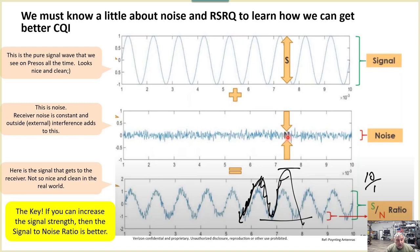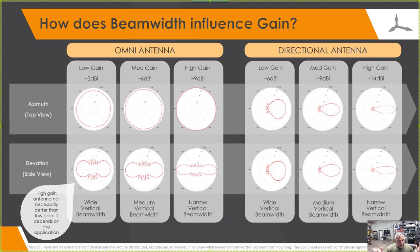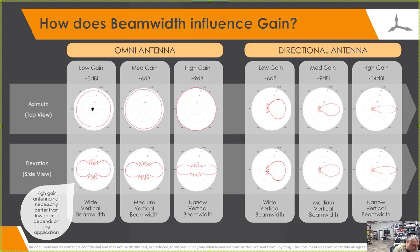Increasing signal strength gain will change our signal to noise ratio, and that's how we increase our CQI. Antennas are a whole topic in themselves, but the main thing antennas do is increase gain. One of the first things in antenna specs is the frequencies covered and the gain at those frequencies. This is an omni antenna — here's the top view looking down on it, and here's the side elevation view.